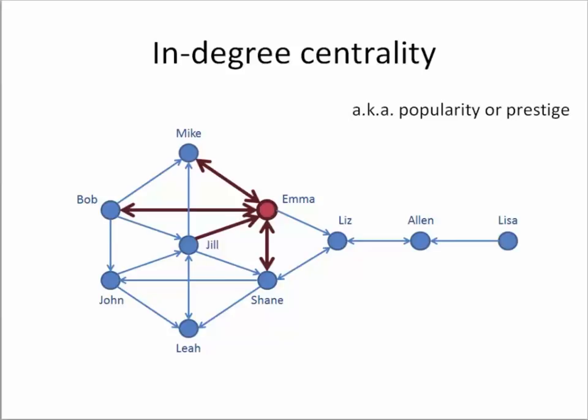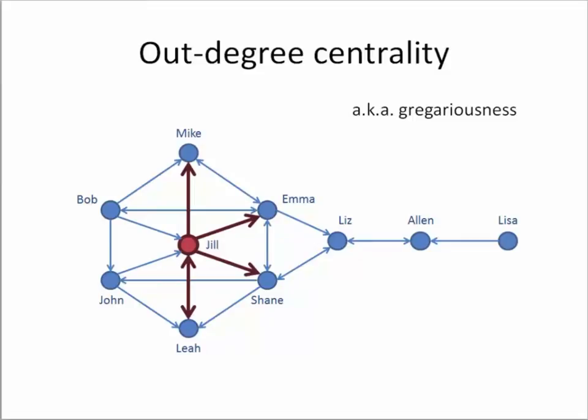However, in some other cases, we are also interested to see how many other nodes a particular node is talking to. In this case, we can see that Jill has a very high number of outgoing connections with different network members. Outgoing connections, for example, may mean how many emails an individual sends to somebody else, or how many messages an individual sends in response to others. Therefore, out-degree can be characterized as generosity in conversation with other people.